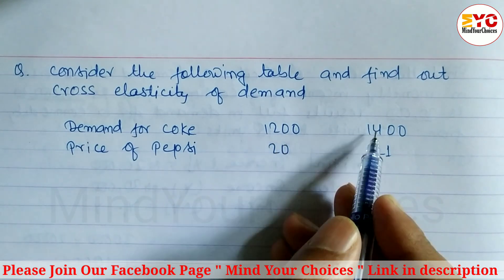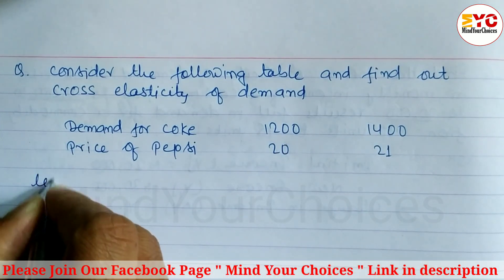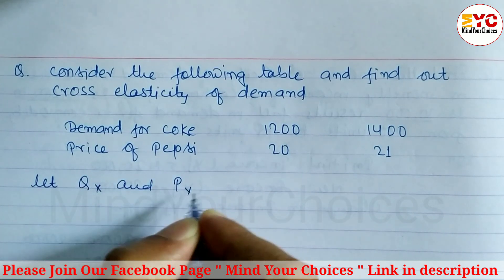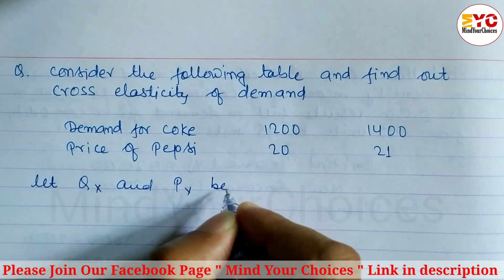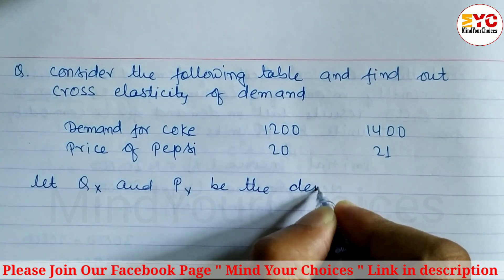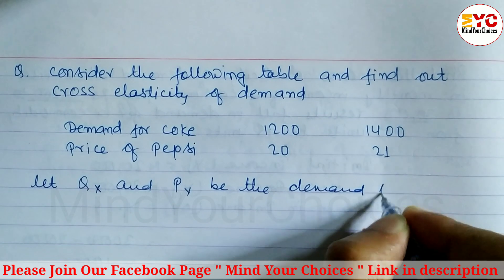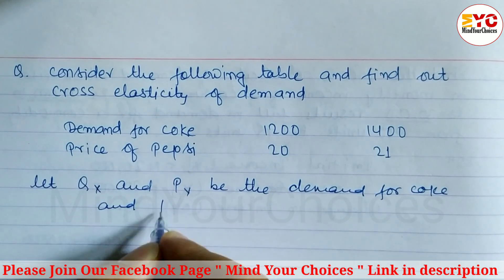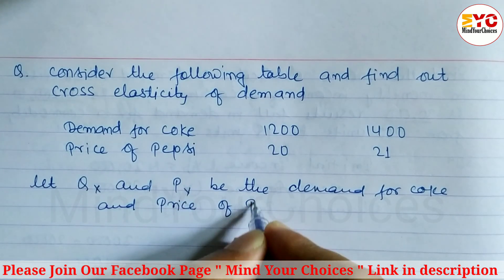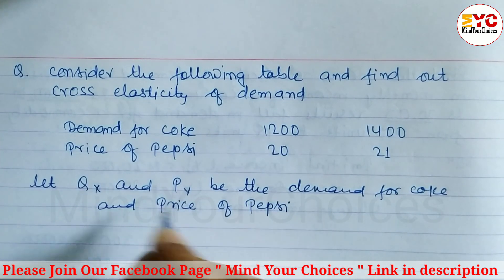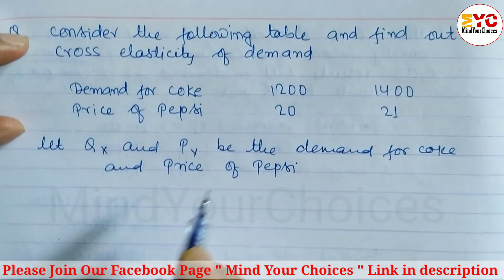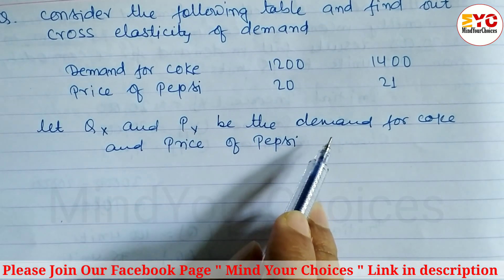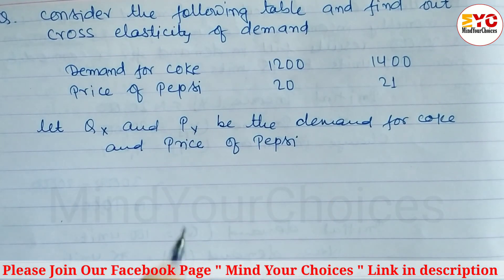Here demand for Coke increases from 1200 to 1400. So let Q X be the demand for Coke and P Y be the price of Pepsi. X and Y are denoted for demand for Coke and price of Pepsi respectively.